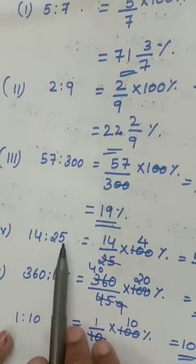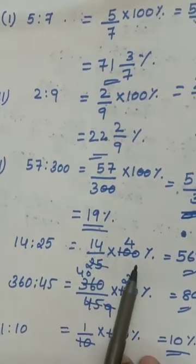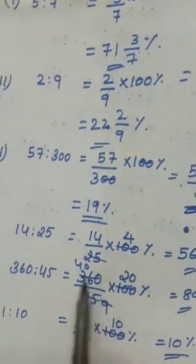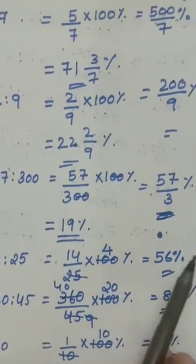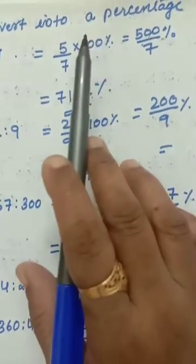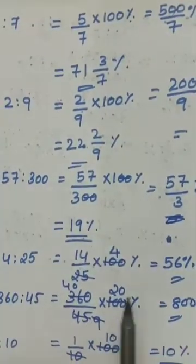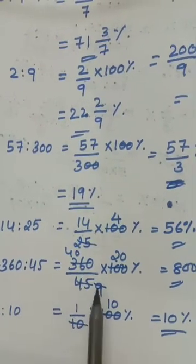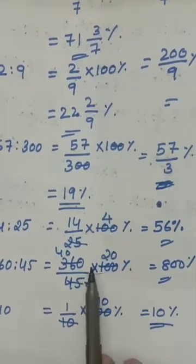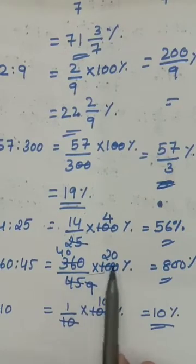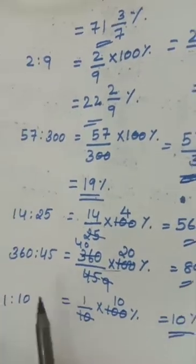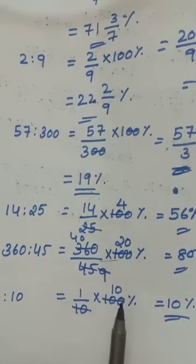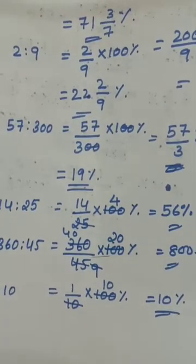14 ratio 25: 14 divided by 25 multiplied by 100 percentage — cutting gives 56 percentage. You must compulsorily write the percentage sign because you are changing the ratio to percentage. 360 ratio 45: 360 divided by 45 multiplied by 100 percentage — cut out and you get 800 percentage. 1 ratio 10: 1 by 10 multiplied by 100 percentage gives 10 percentage.